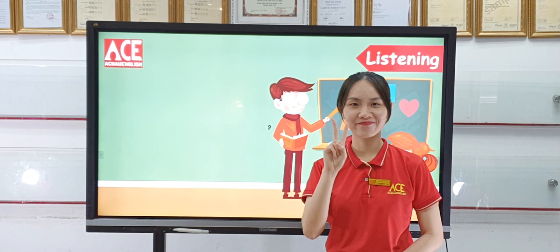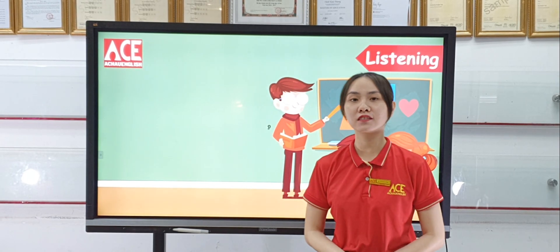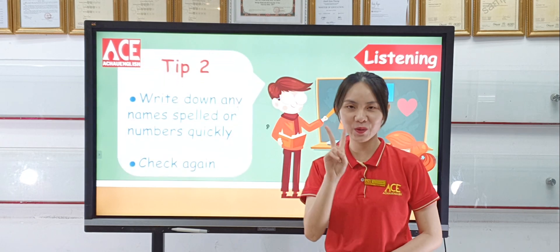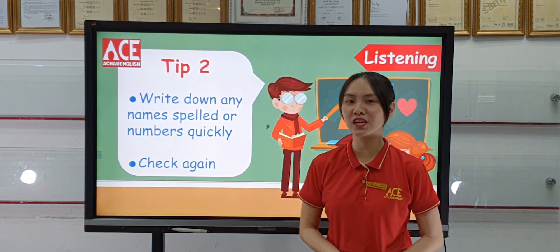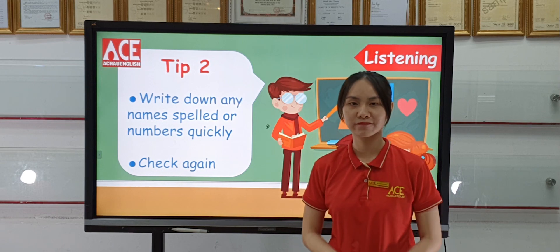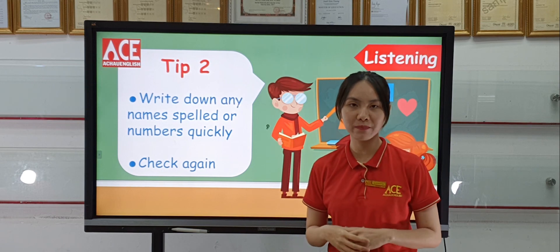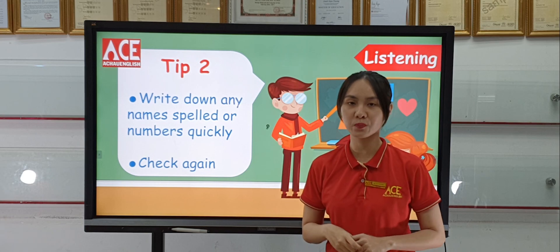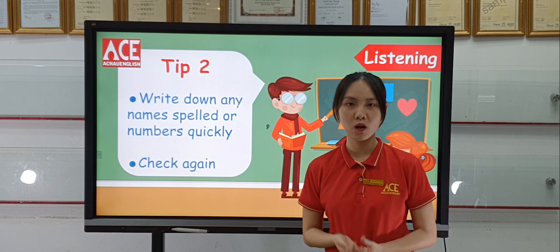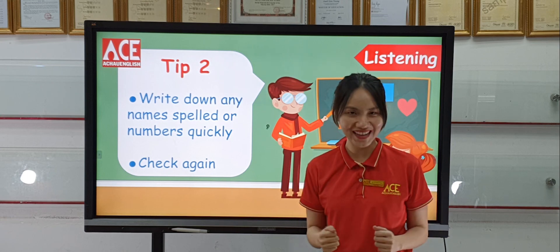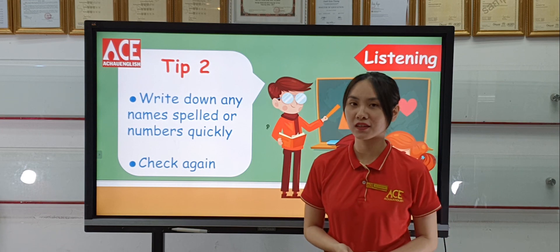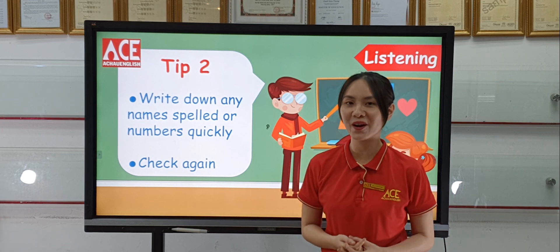Number 2: In listening Part 2, there will be a conversation between two people and you may find it hard to catch the words. Please remember this tip: when you first listen to the speaker, write down the name spelled or the numbers as fast as you can because you may miss them. Later, you'll check it again on the second listen.